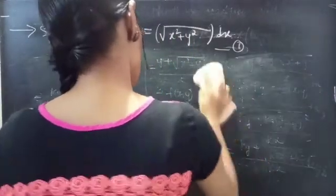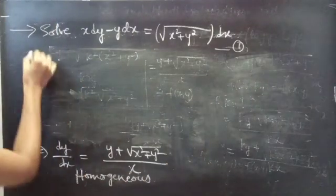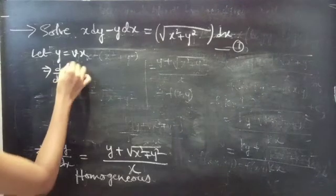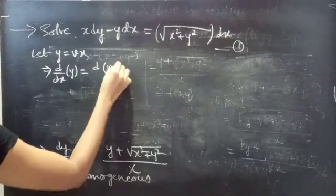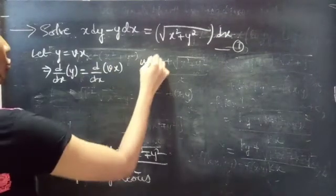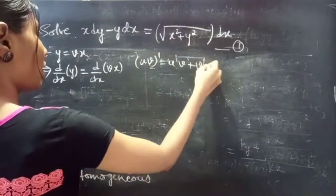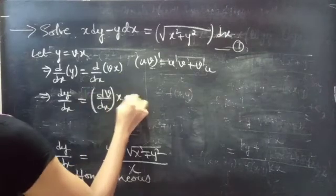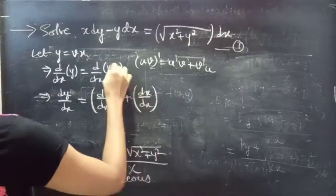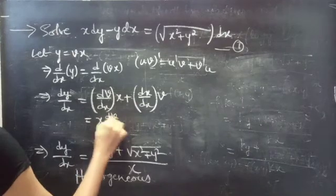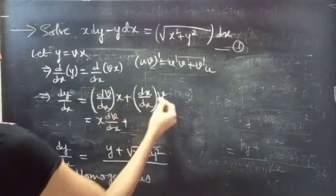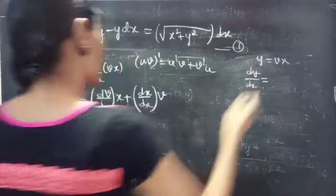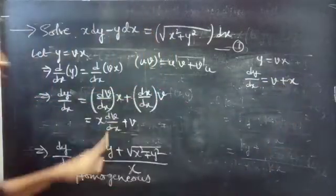We will solve this homogeneous differential equation by taking y equals to vx. Let y equals to vx. Differentiating both sides with respect to x, using the product rule uv' = u'v + v'u, we get dy/dx equals to dv/dx times x plus 1 times v. So dy/dx equals to v plus x dv/dx.